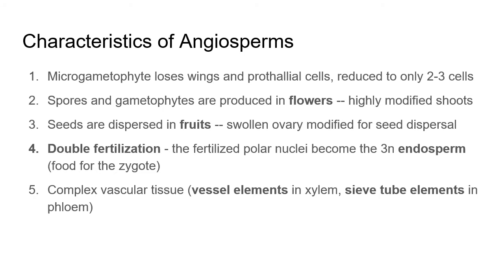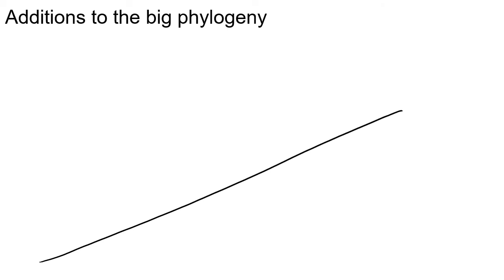Here is a review slide of those characteristics if you need to pause and go over them. We can add all of those traits to the big phylogeny — this just ends with angiosperms, which are one monophyletic group, much like the gymnosperms.